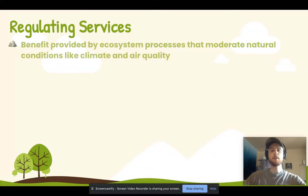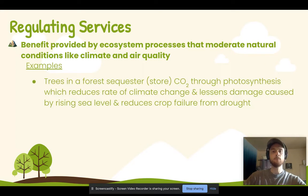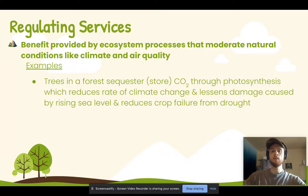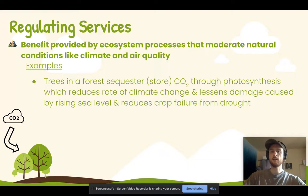Regulating ecosystem services are benefits provided by ecosystems as they relate to regulating conditions such as climate or air quality. The key example is that trees in a forest sequester or take in carbon dioxide from the atmosphere via photosynthesis, storing that CO2 in their tissues. This results in decreased CO2 in the atmosphere, less climate change, and therefore we pay less to repair storm damage, lose less property as sea level rises, and reduce crop failure from drought. This diagram shows CO2 being taken out of the atmosphere by trees, regulating and stabilizing the climate.